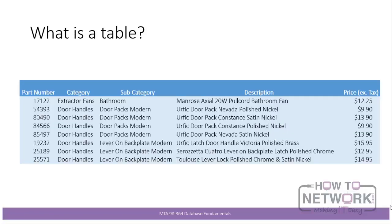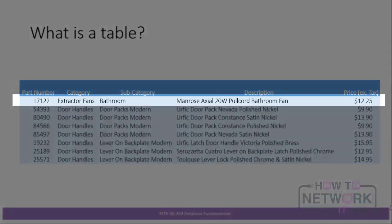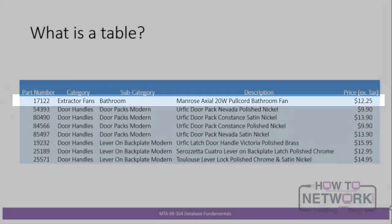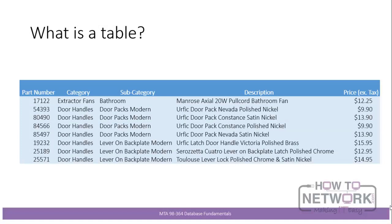The most fundamental part of database storage is the table. Here is a limited table of information about parts: part number, category, subcategory, description, and price. Each part corresponds to a horizontal row. The first part has part number 17122, in the category of extractor fans, subcategory extractor fans for bathrooms, described as a Manrose Axial 20 Watt Pull Cord Bathroom Fan, priced at $12.25 excluding tax. The second item has part number 54393, category door handles, subcategory door packs modern.